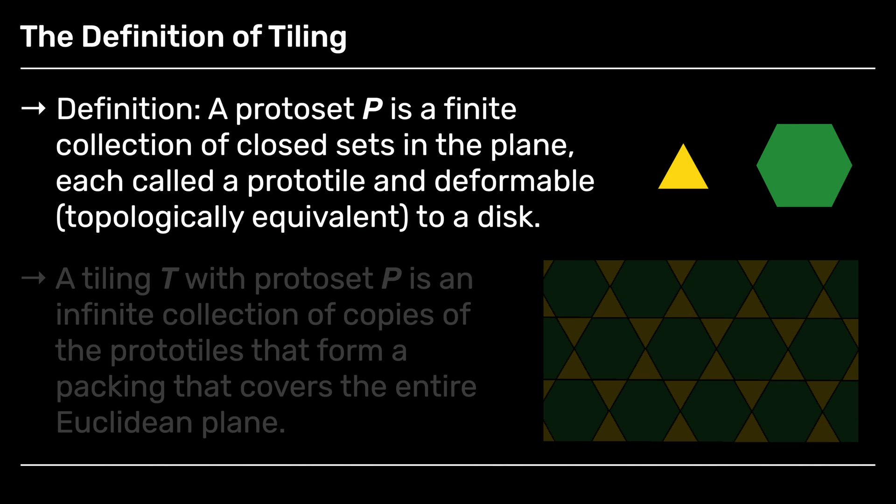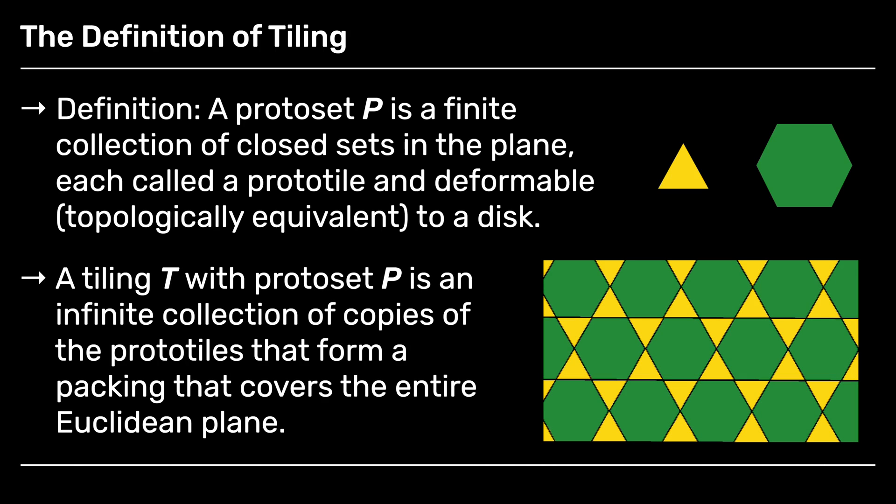So definition: we'll say a proto set is a finite collection of closed sets in the plane, each called a proto tile, and each deformable, another word for that is topologically equivalent, to a disk. In this example, I have two proto tiles. And then we say a tiling T with proto set P is an infinite collection of copies of the proto tiles that together form a packing and a covering of the entire Euclidean plane. In this example, you see this tiling by my two proto tiles that is both a packing and a covering of the plane.